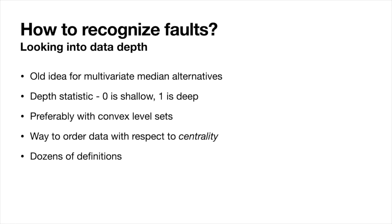Data depth is an old idea introduced by Tukey in the 70s, which is generally a method of ordering multivariate data. Depth statistics represents the data set as assigning them values that are shallow or deep. So each data point can be assigned a value between 0 and 1. There are set of axioms that formulate data depth statistics, in a way similar to norm axioms.